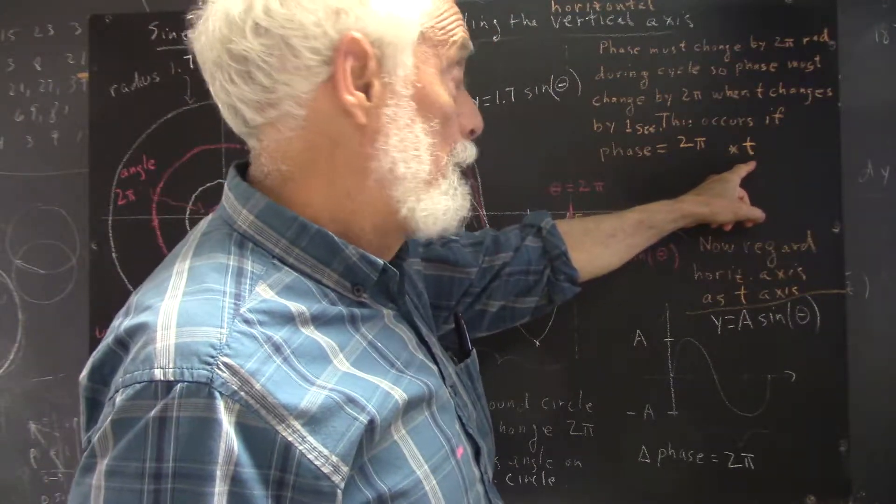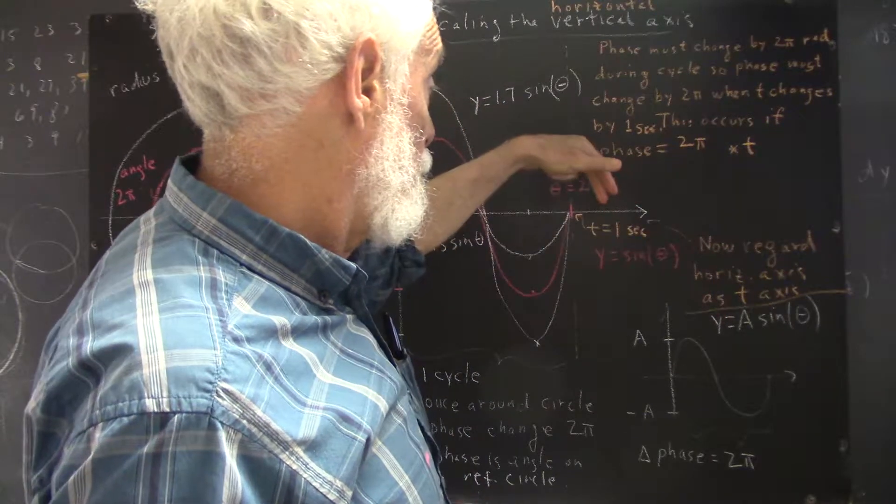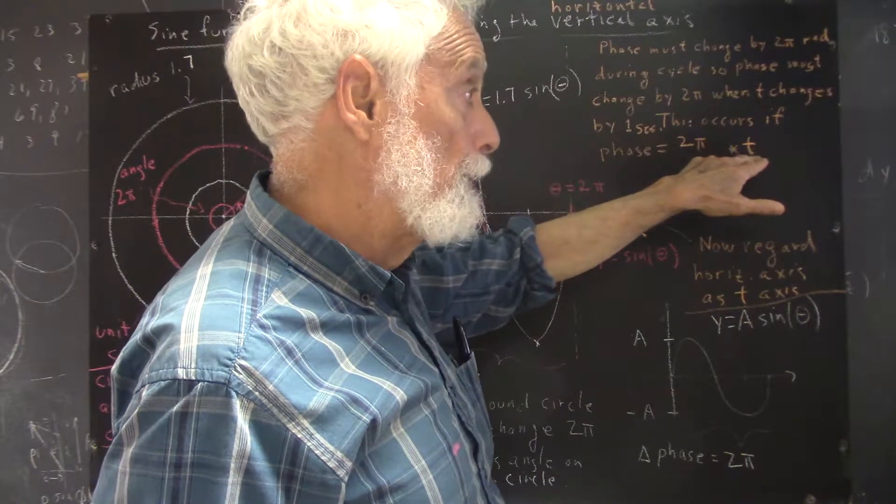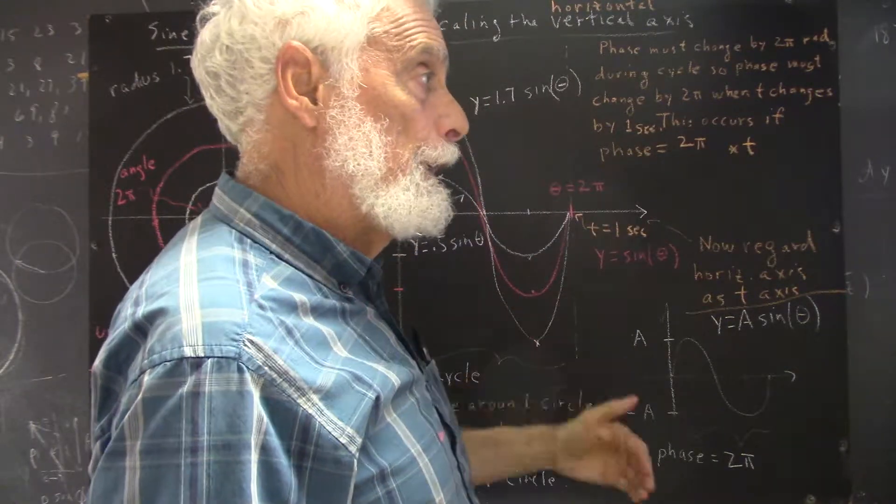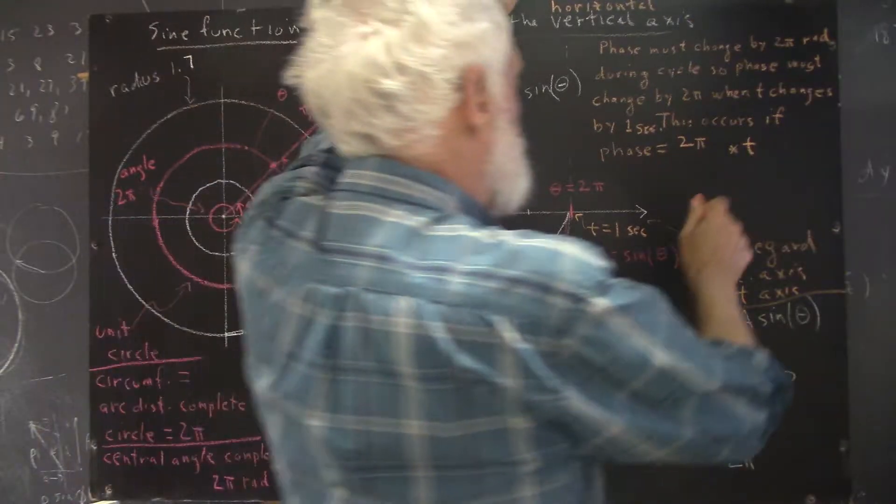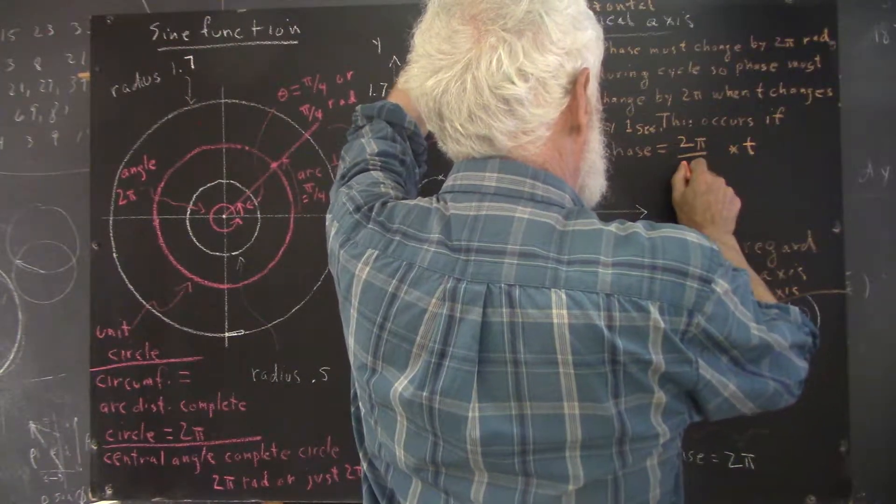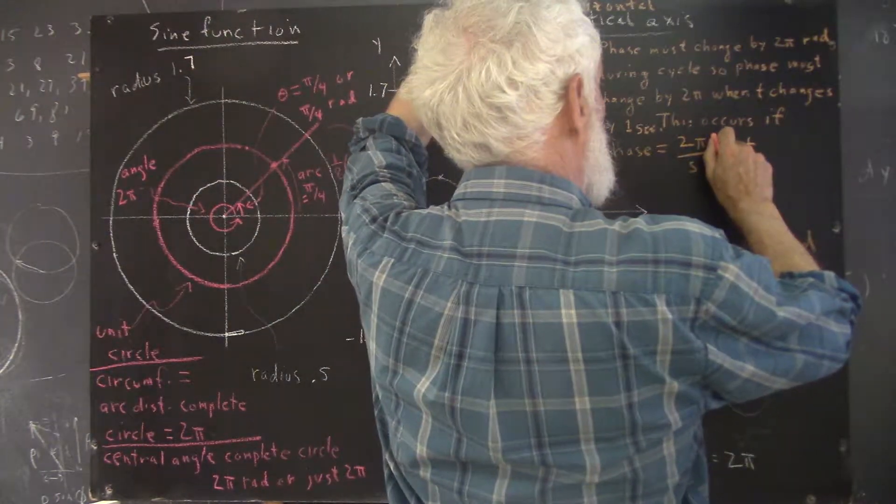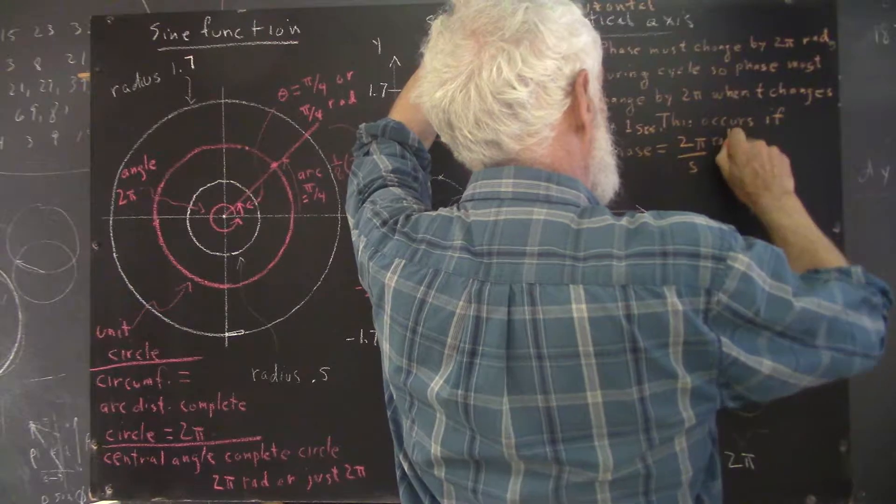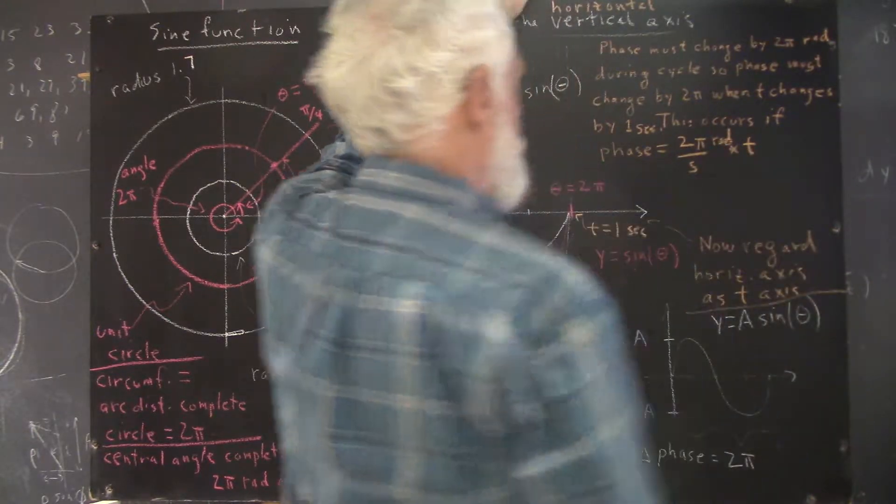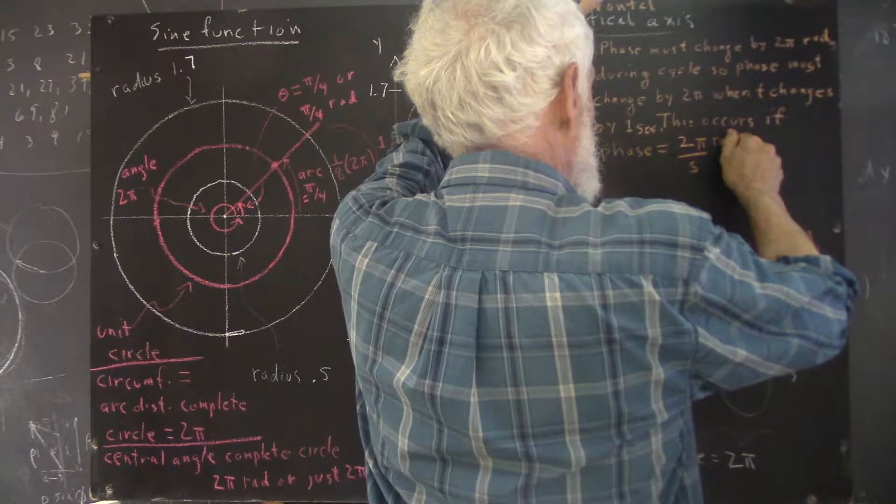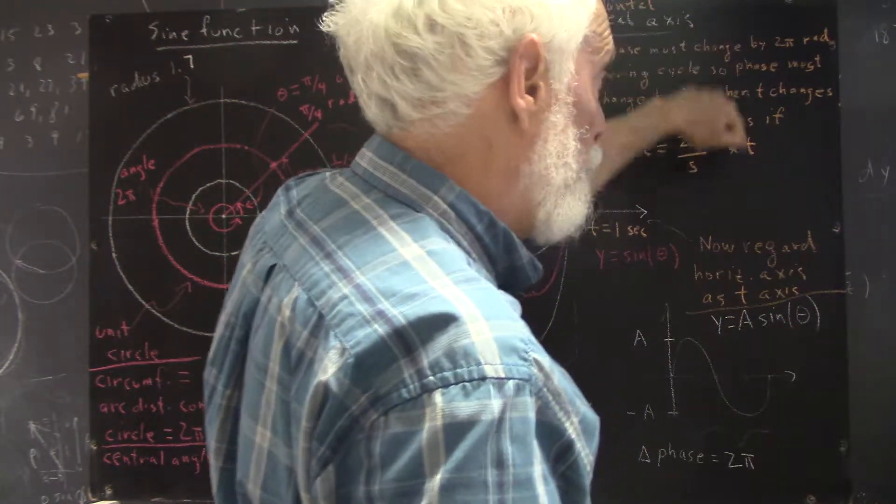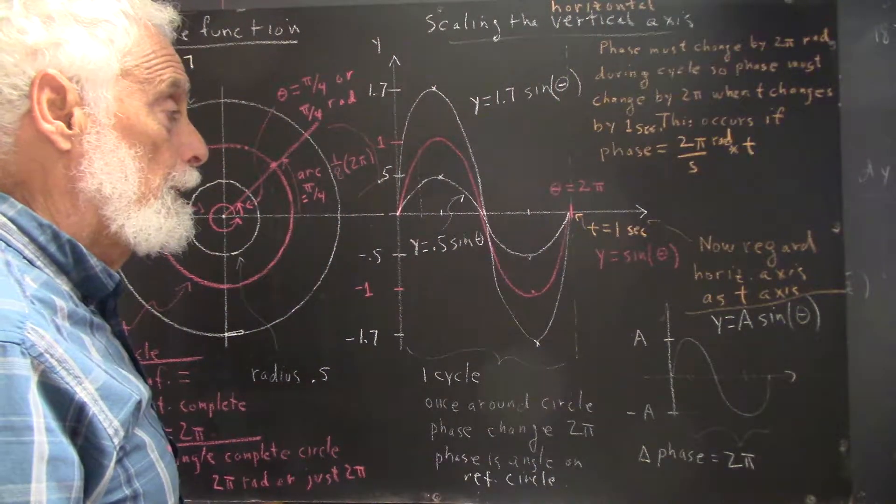So t is going to have a unit of 1 second at this point. If we multiply 2π radians by 1 second, we get 2π radian seconds, and we don't want that. So we want to have a second in the denominator. The 2π is actually in radians, so this is 2π radians over seconds times t.